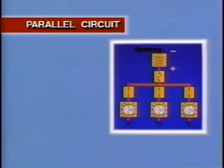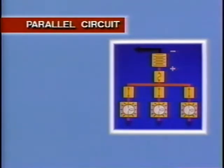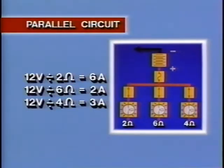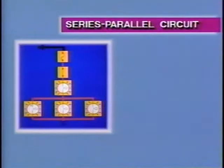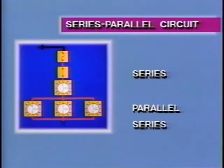Parallel circuits are designed just a little differently. A parallel circuit starts at the battery, then divides into two or more portions called branches. Each branch contains a load device and possibly a switch, and each branch goes to ground. In a parallel circuit, if one branch fails, the others remain active. Voltage across each load is the same, but current through each load will be different if resistance values are different. The sum of the separate currents equals the total circuit current. Occasionally, you'll see a series circuit with a parallel circuit in the middle — this is called a series-parallel circuit.